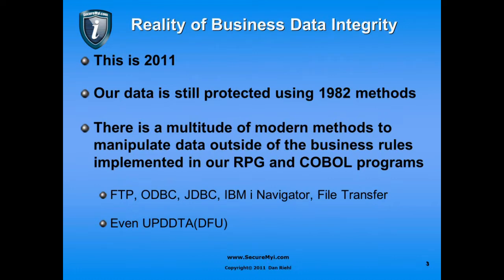Today we have tools like FTP, ODBC, and JDBC. IBM iNavigator has a database navigator that allows you to manipulate field values. You can use Client Access file transfer to blow away a file. You can even use tools as simple as Update Data or DFU to change field values to values that are not proper for the data.